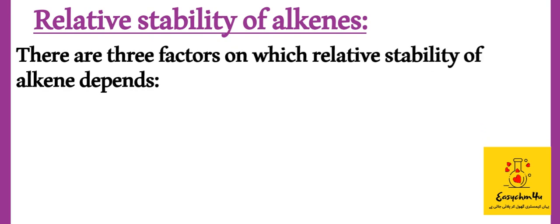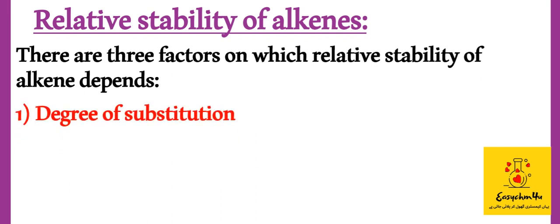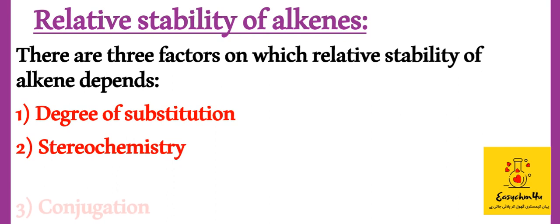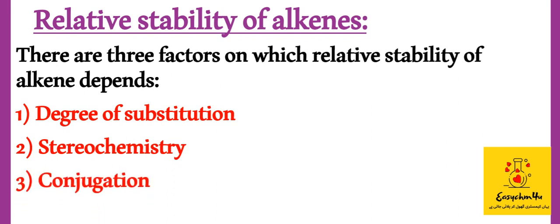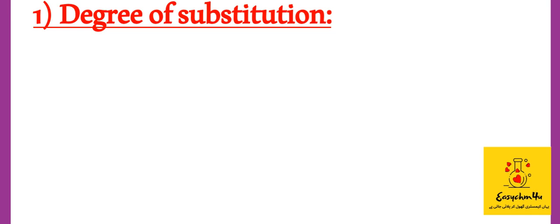There are three factors on which the relative stability of alkenes depends. Number 1: Degree of Substitution. Number 2: Stereochemistry. Number 3: Conjugation. Let's start with Degree of Substitution.